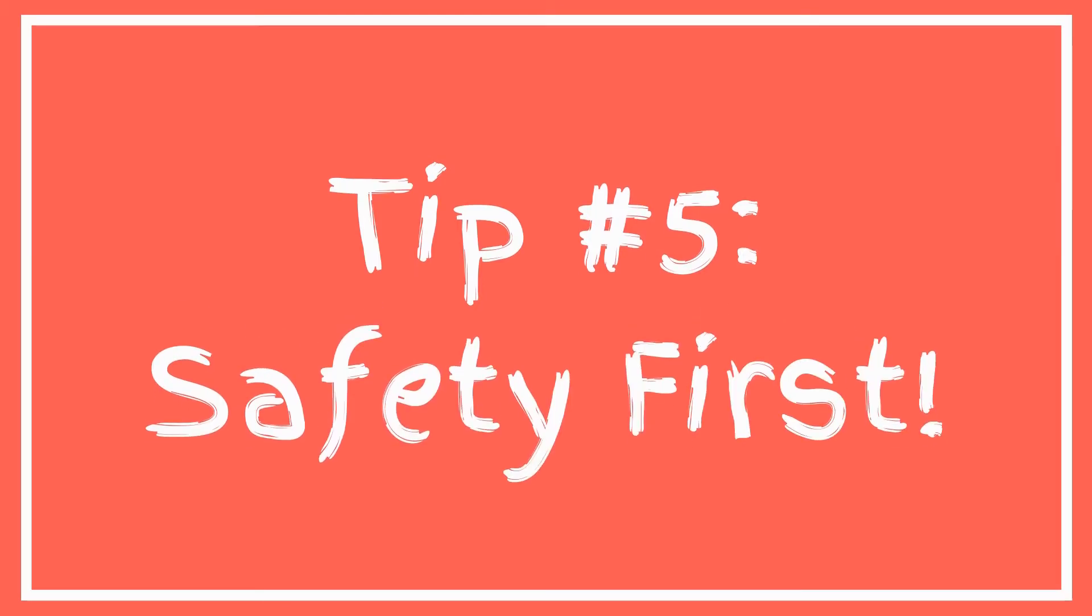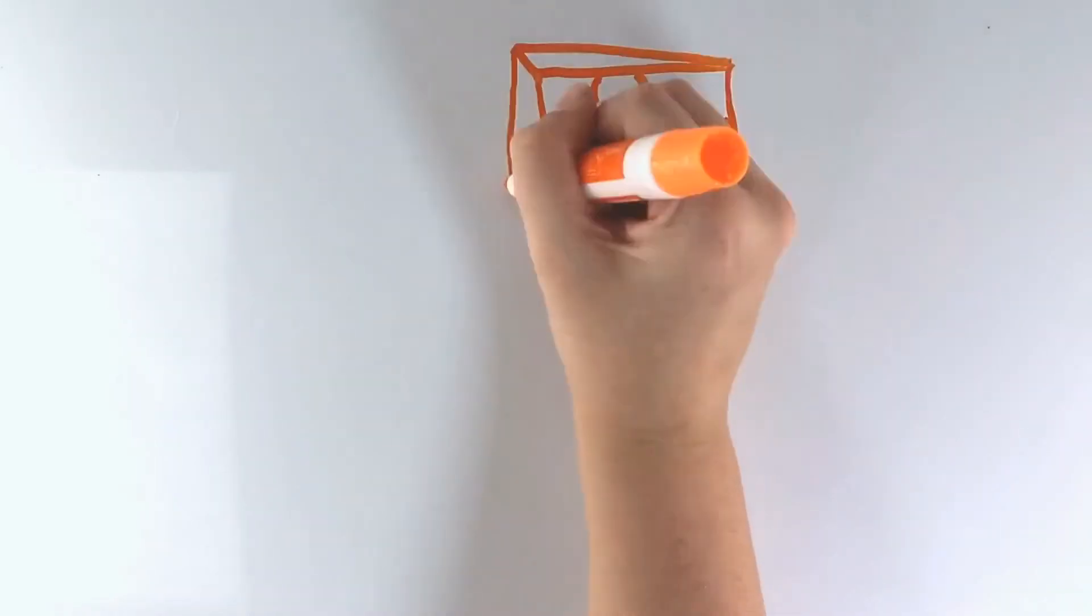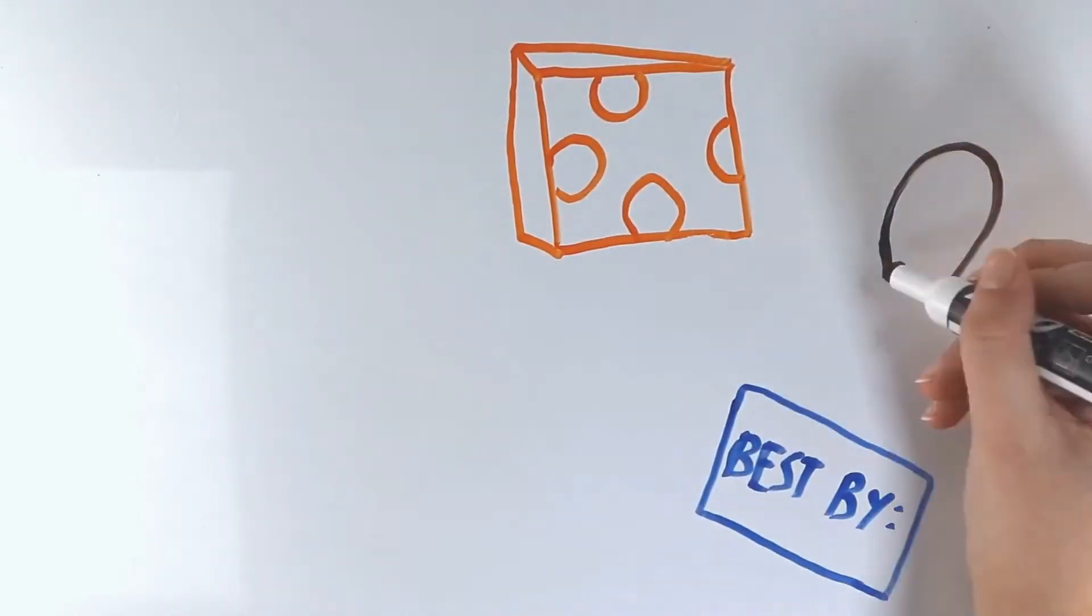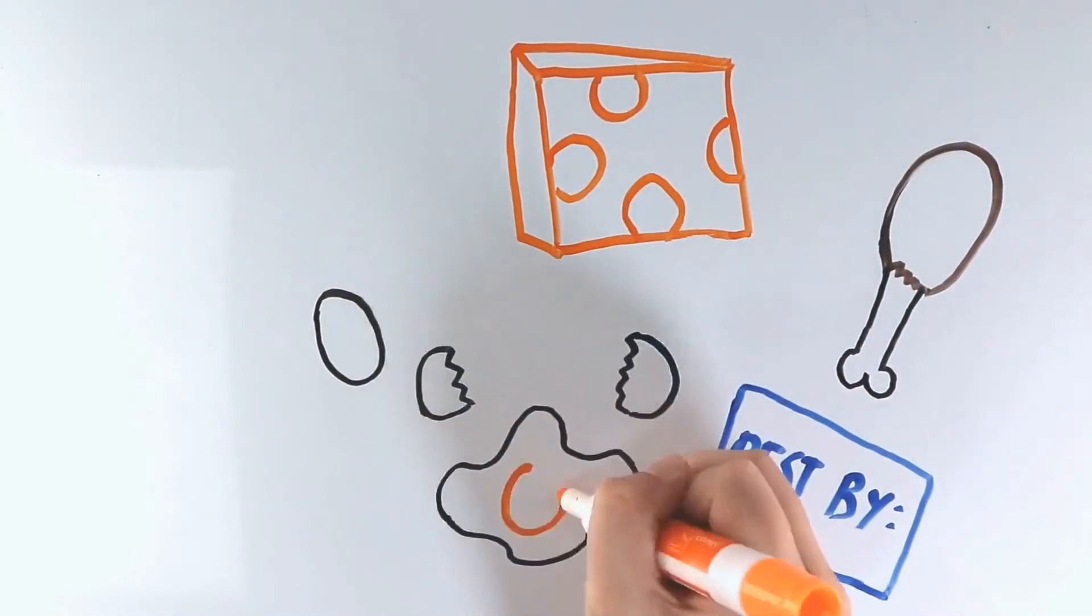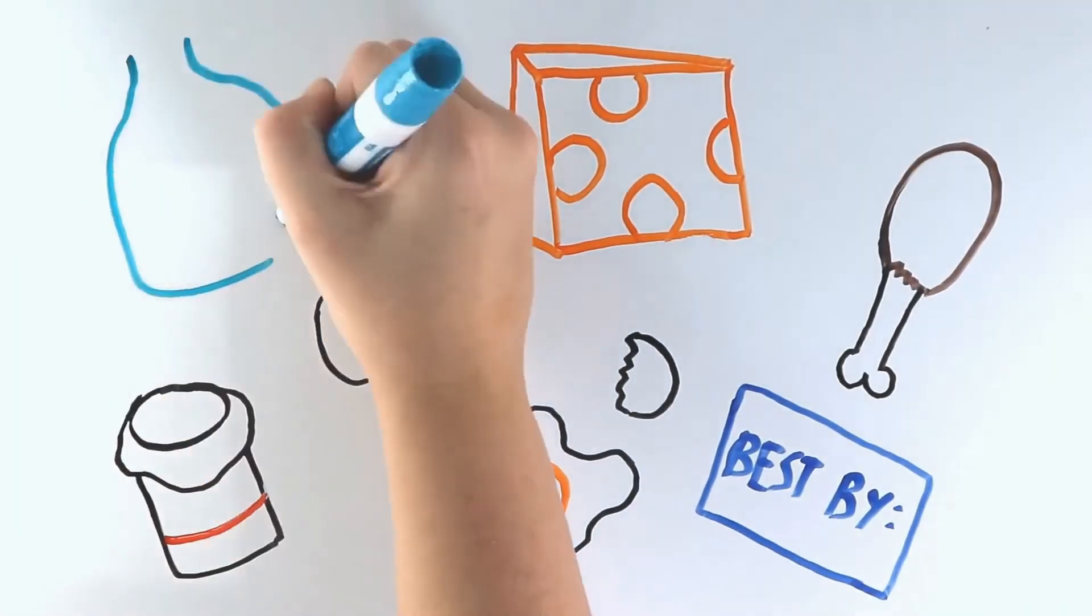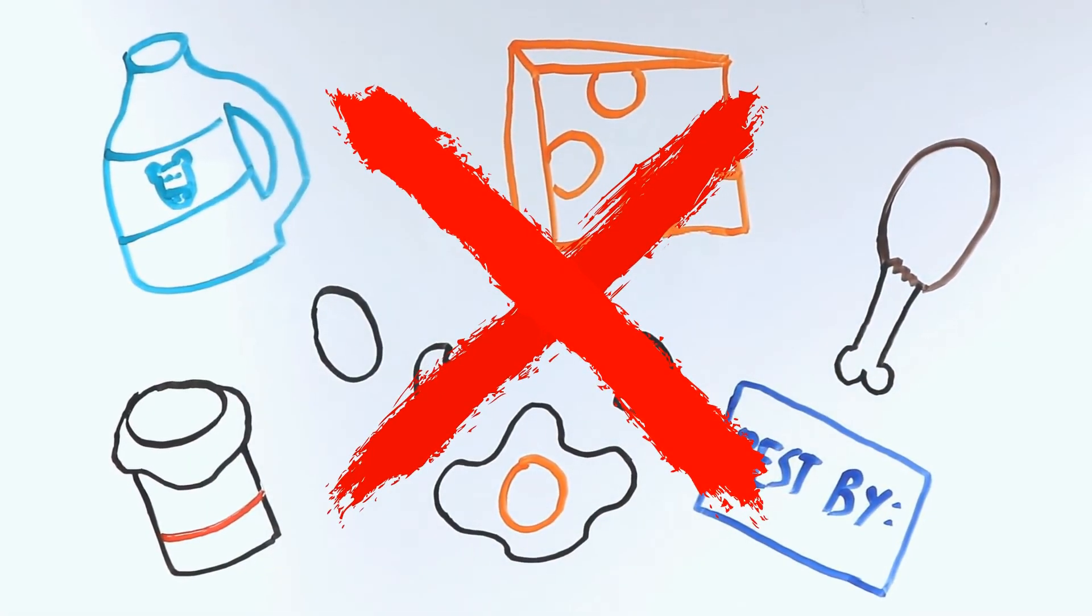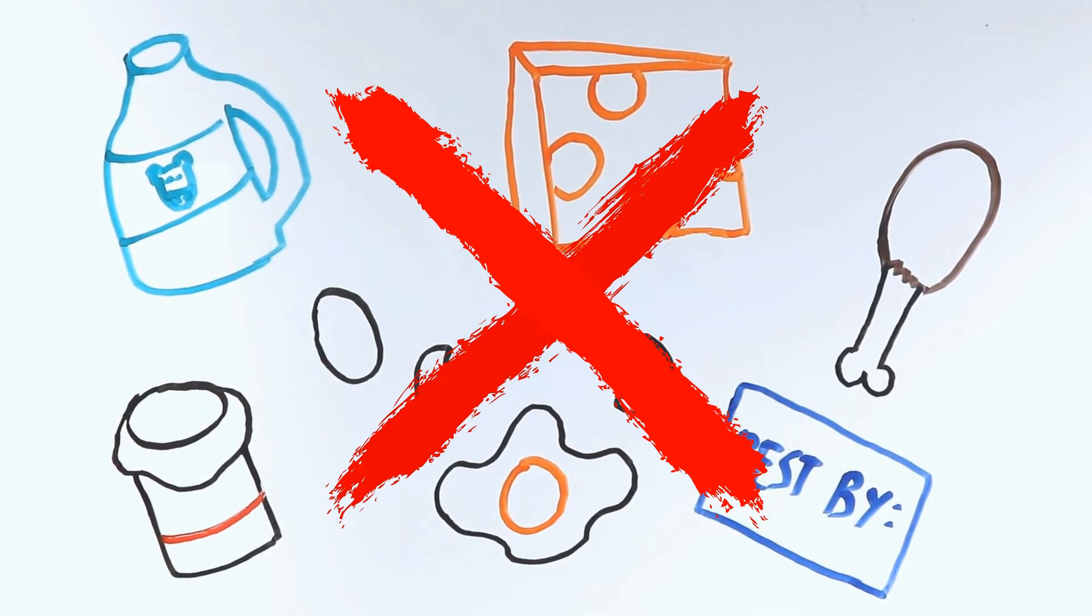Tip number five, safety first. When doing food experiences, never serve food that is undercooked, including meats or eggs, unpasteurized, including milk, yogurt, and cheese, spoiled, or expired, including foods past their best-by date.